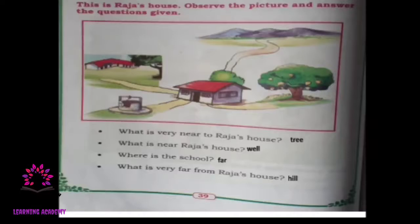Now, whose house is this? This is Raja's house. Observe the picture and answer the questions given. You can find Raja's house, one school, a hill, a tree, and a well. What is very near to Raja's house? It's a tree — the tree is very near to Raja's house.